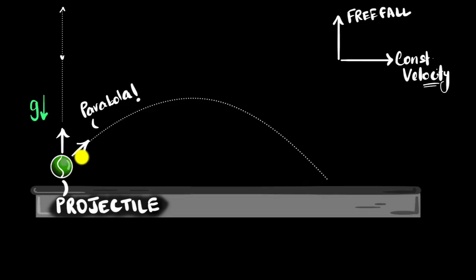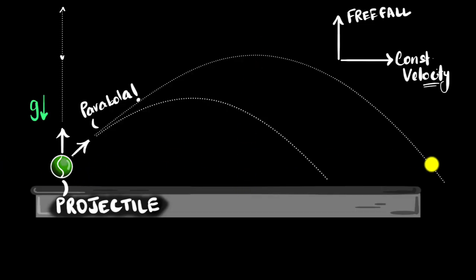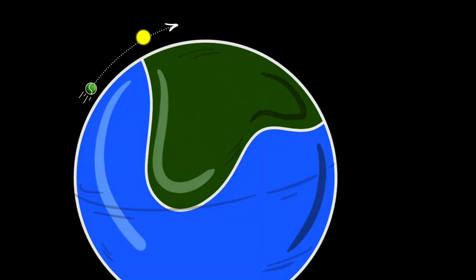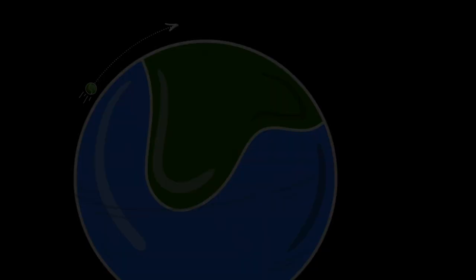What happens if you throw the ball faster? You get a bigger parabola — it goes higher and farther. But remember that Earth is round. So what if you throw it so fast that as the ball's path curves, even the Earth curves below it? That's a story for another video. Free falling is awesome.